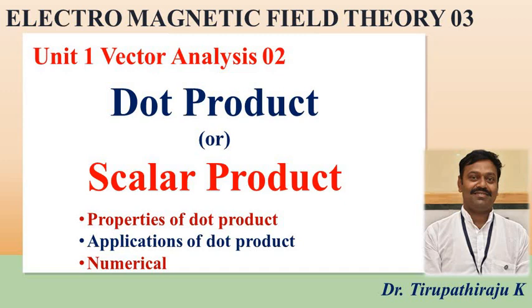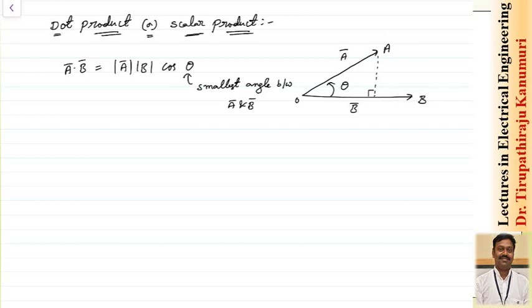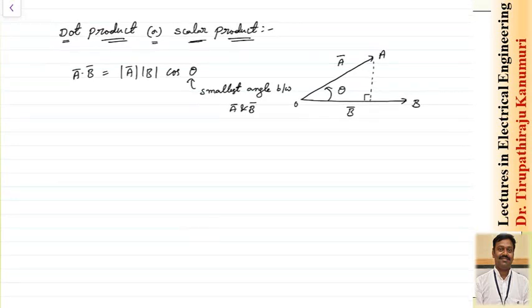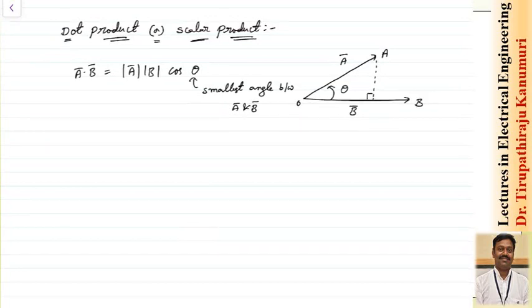Good morning all. Today we are going to discuss about dot product or the scalar product. The name itself is telling that this is represented by the dot between the two vectors. If I want to do the scalar product of two vectors a and b, I will represent by a dot b, which is called as a multiplied by the magnitude of b multiplied by cos of the angle between them.